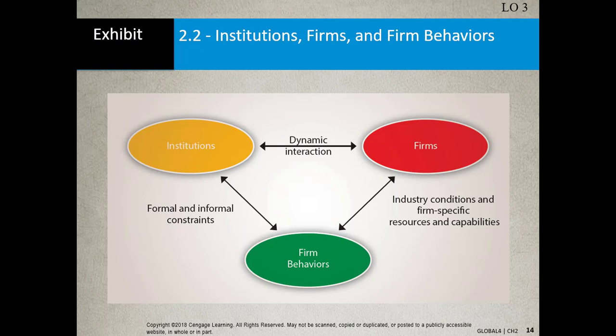You can check out the site for rankings — New Zealand is at the very top. Now, institutions, firms, and behavior: we're on page 24. This is the theme for every single chapter — institutions and firms, and how that engages firm behavior. There's a dynamic interaction between the firm and institutions, with formal and informal constraints between firm behavior and institution, as well as industry conditions and firm-specific resources and capabilities shaping how the firm will behave.